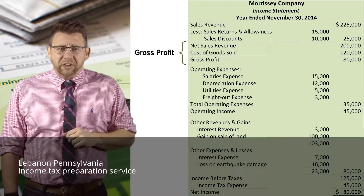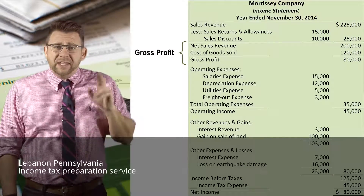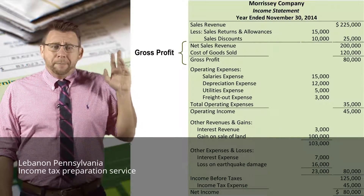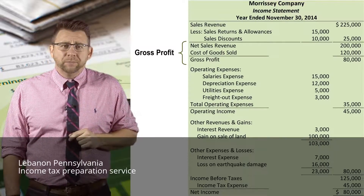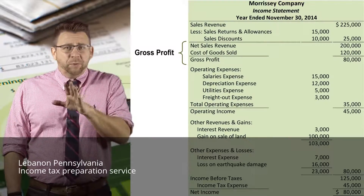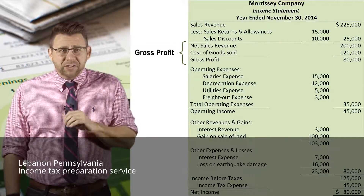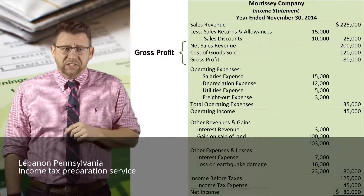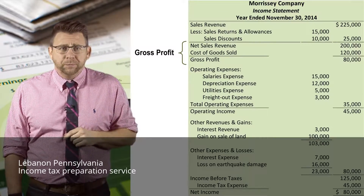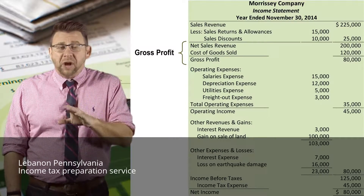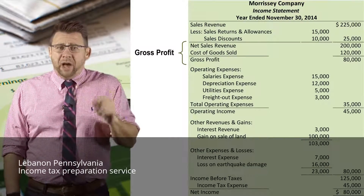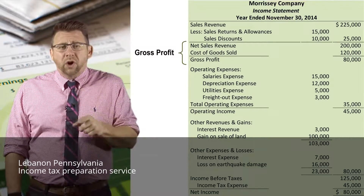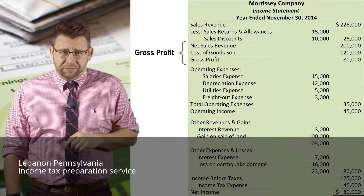The next important subtotal is gross profit, calculated by taking net sales revenue minus cost of goods sold. At this point, cost of goods sold is the only expense deducted in this section. Gross profit is the amount that inventory was sold for more than the cost of inventory.